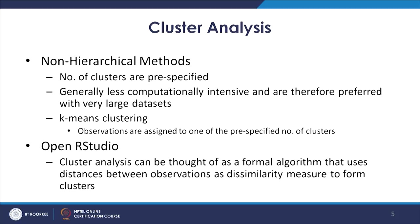In K-means clustering, observations are assigned to one of the pre-specified number of clusters. The task is simpler: given the specified number of clusters, observations are assigned to one of them depending on their similarity or dissimilarity.